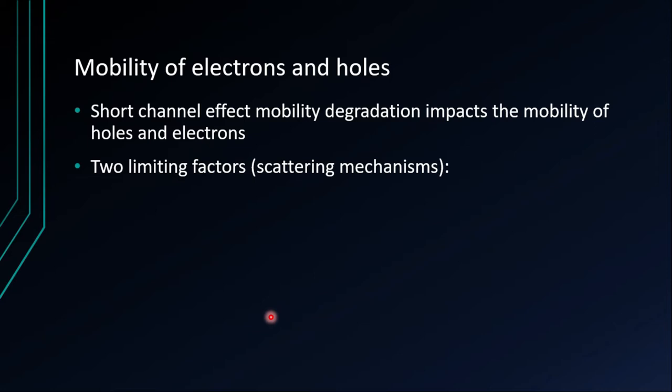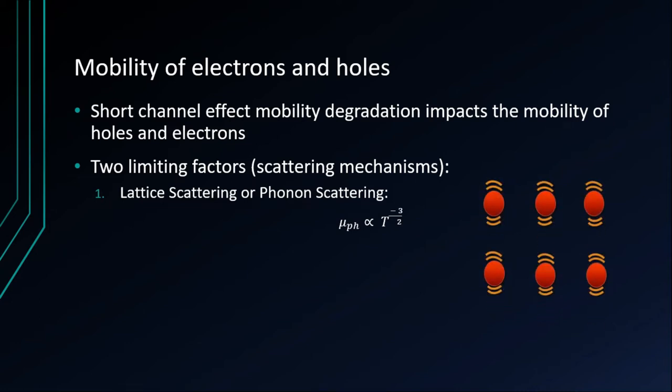Except this short channel effect, we have two more limiting factors which are actually scattering mechanisms. The first one is lattice scattering or phonon scattering. The crystal lattice vibration causes a disruption in the perfect periodic potential function. If we see this figure, we will understand that the atoms sitting in the crystal lattice won't be still, maybe below 0 degree Kelvin they're actually still. But if we are at room temperature, then as the temperature increases, the vibration happens.